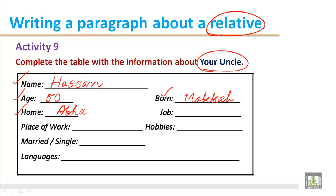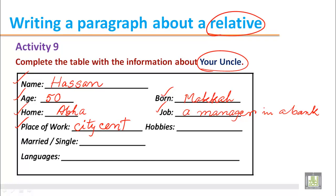Job: what is his job or what does he do? He can be a teacher, manager, or police officer. Here we write as an example a manager. He works as a manager in a bank — we can write he is a manager in a bank. Place of work: where does he work or where is his office? We write that his office is in the city center, Abha.